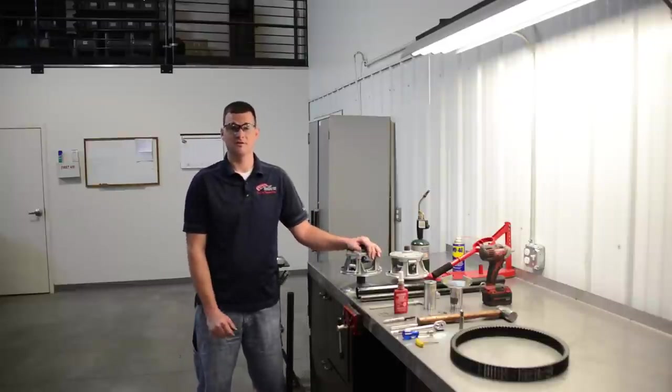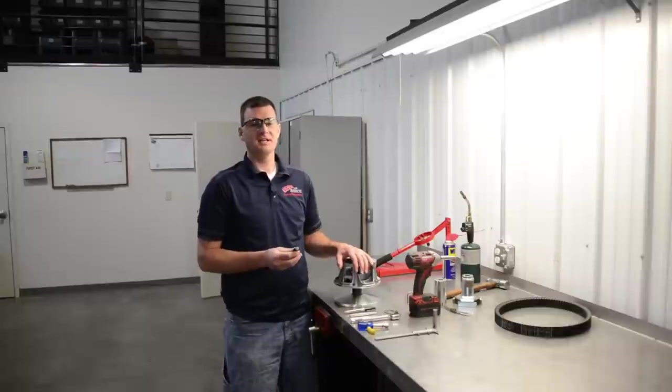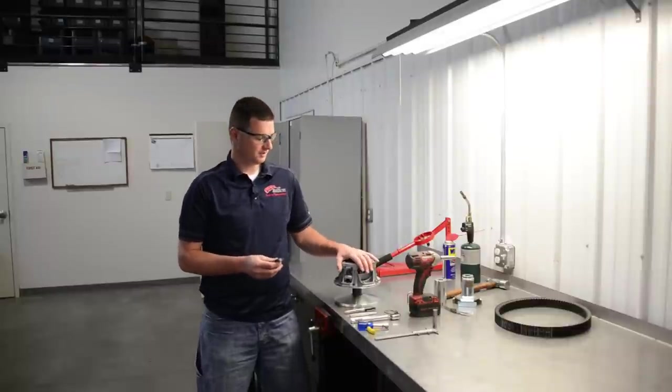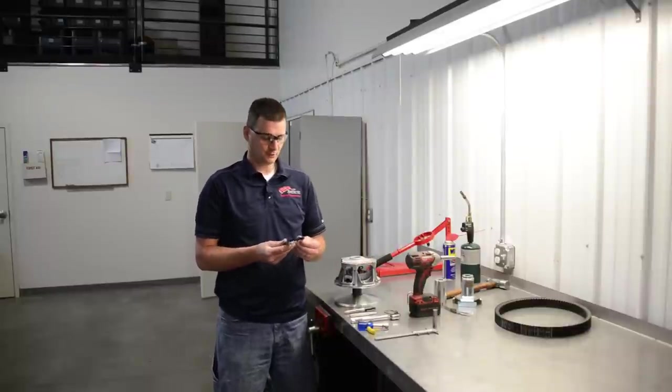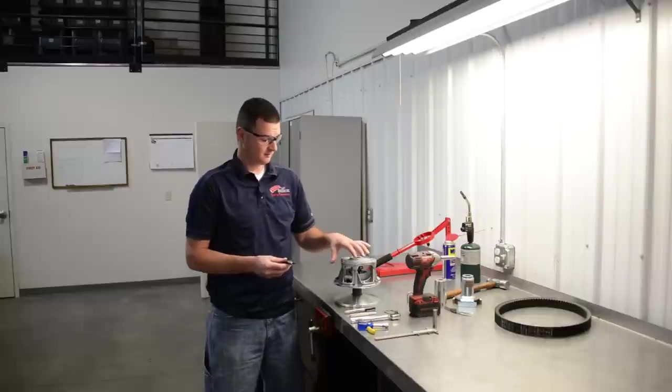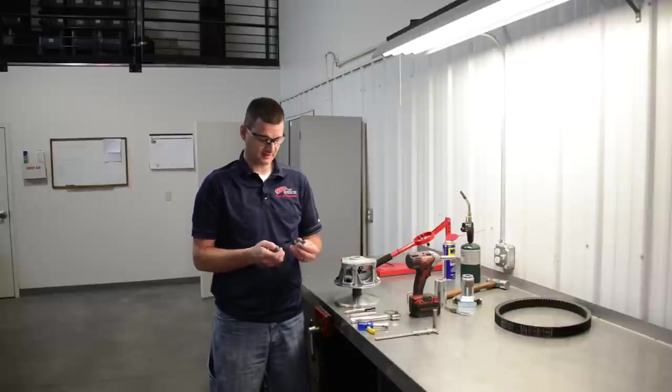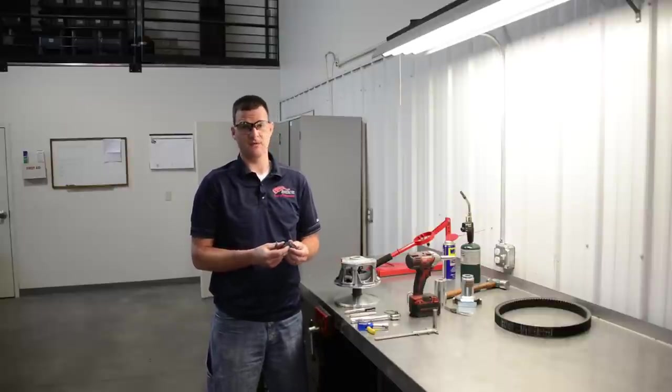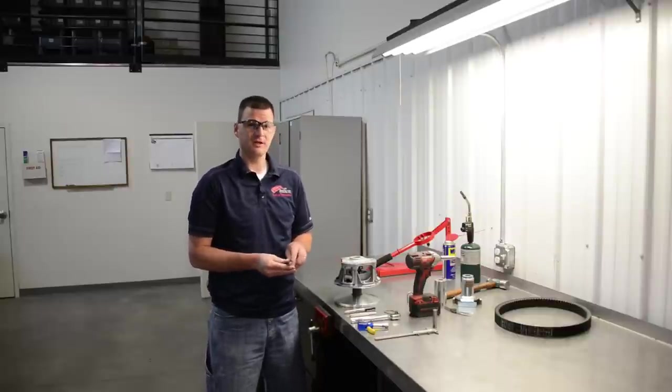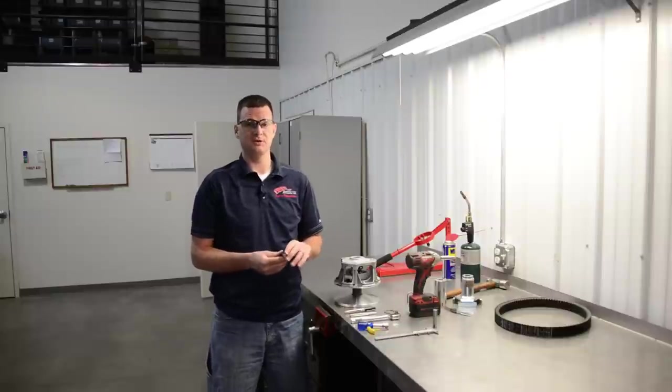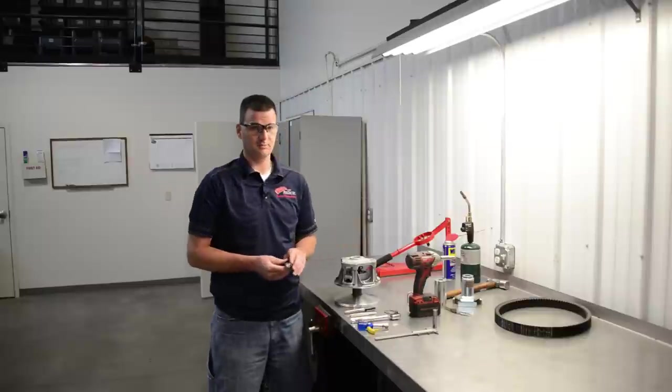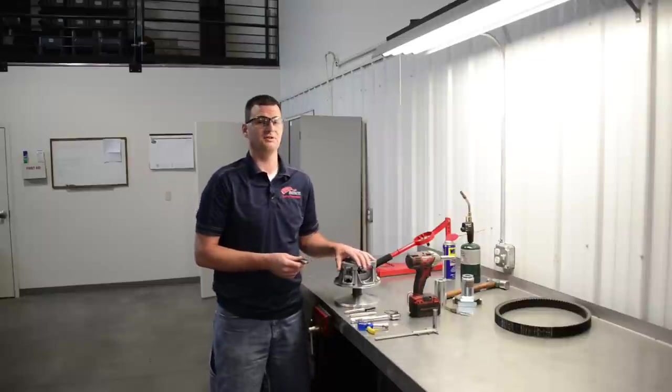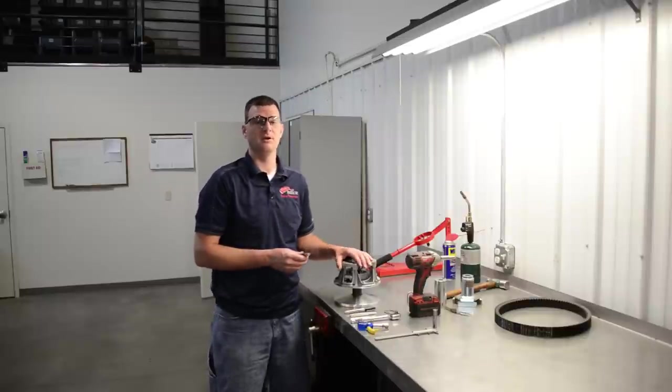One thing to take into consideration before we check our belt to sheave clearance is that different ramps or weights can affect the belt to sheave clearance based on the fact that they can have a different heel height or a different ramp profile. So you want to go ahead and install whatever weights or ramps you're going to be running before you check your belt to sheave clearance. That way when we check the belt to sheave clearance we'll know that it's accurate for the application that we're going to be running.